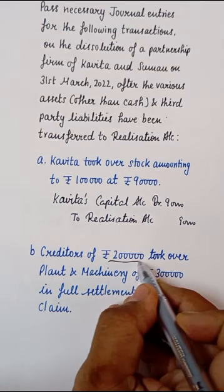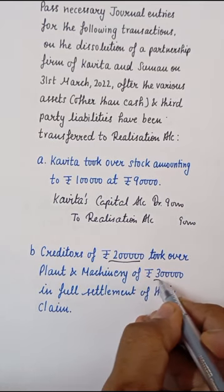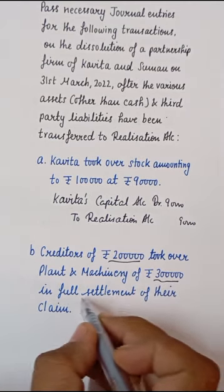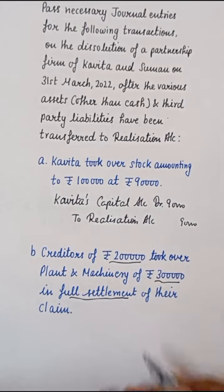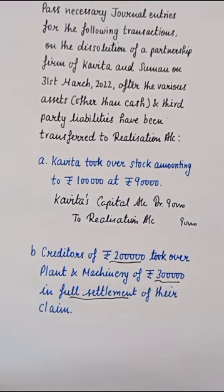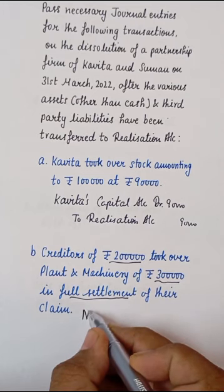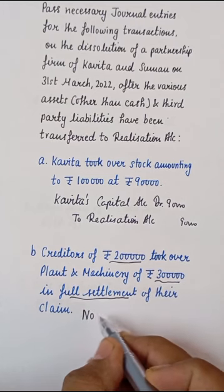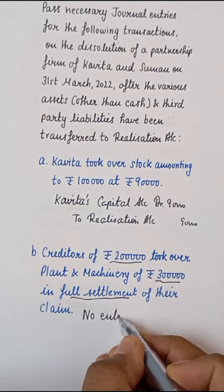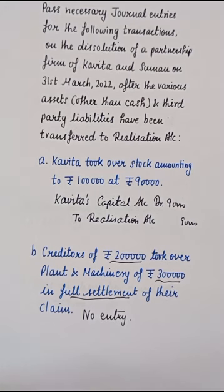दूसरा transaction: जो Rs.2,00,000 के creditors थे, उन्होंने Rs.3,00,000 की machine को ले लिया in full settlement of their claim। जब कोई creditor किसी asset को take over करता है in settlement of his claim, तो न वो कोई पैसा ले रहा है, न वो पैसा दे रहा है। ऐसे में asset को hand over करने की कोई entry नहीं बनती। तो यहाँ पर कोई entry नहीं बनाई जाएगी।